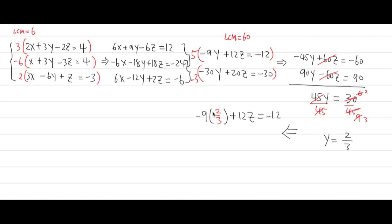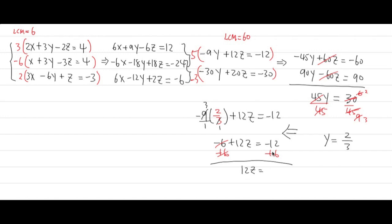Adding 6 to both sides, we get 12z equals negative 12 plus 6, which is negative 6. Dividing both sides by 12, z equals negative 6 over 12, which is negative 1/2.